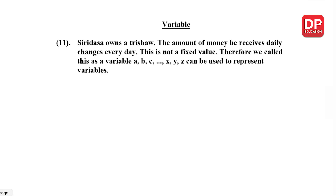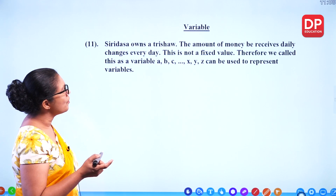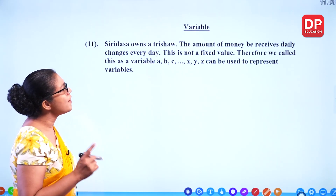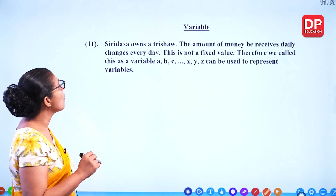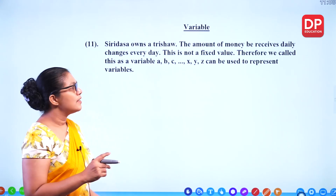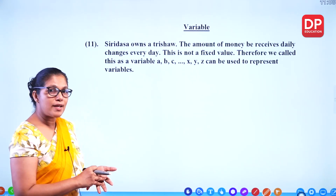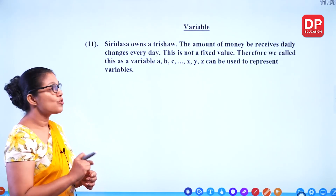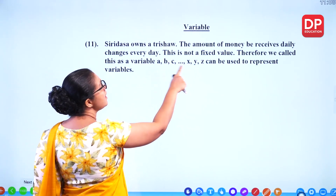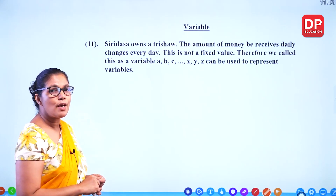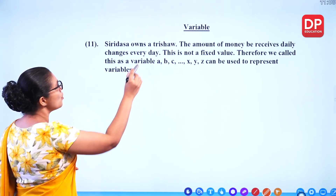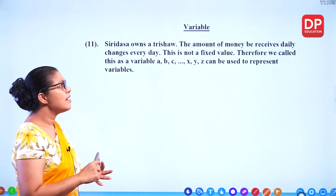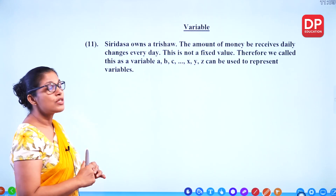What are variables? Sirithasa owns a trishaw. The amount of money he receives daily changes every day — this is not a fixed value, therefore we call this a variable. Any value that is not fixed and is changing all the time, we call those variables. Here also we use letters in the English alphabet to represent variables. So far we did known terms and unknown terms, and now we learn about variables.